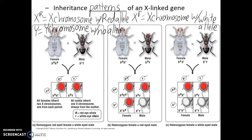So we started with a male fruit fly with white eyes — it's X lowercase r Y — crossed to a female fruit fly with normal red eyes, and we look at their offspring. All of their offspring have red eyes. But something to note is that the females are now carriers for this white eye color allele. They have red eyes but they're also carrying the white eye allele.